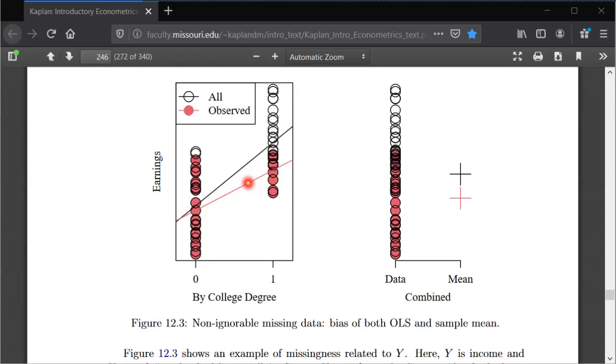It's not true that we'll always have negative bias just in this particular example. You could think of other examples where maybe there's positive bias.